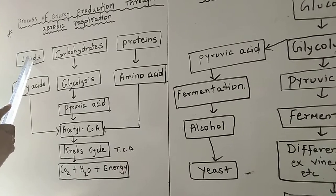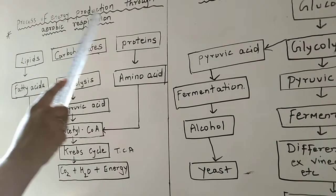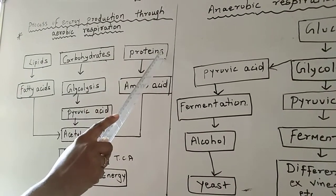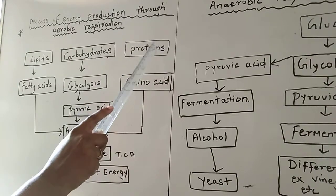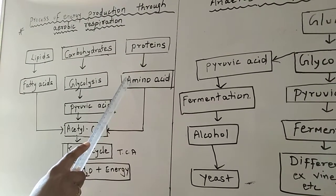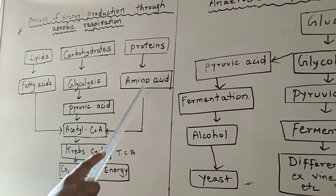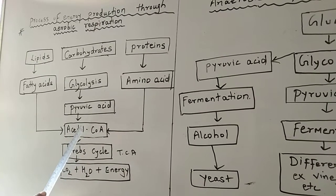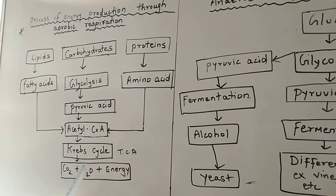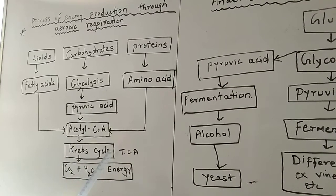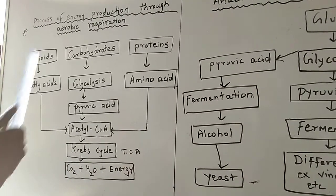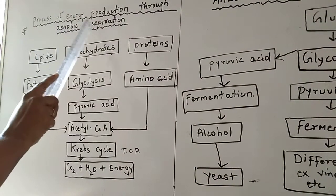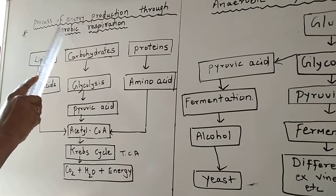Now if lipids or fats are also not present in our diet, then in that case the body utilizes proteins. We had also taken information that proteins are known as body building nutrients. Now proteins get converted into amino acids, and from amino acids they get converted into acetyl coenzyme. And again from acetyl coenzyme, carbon dioxide, water and energy would be produced with the help of Krebs cycle. So all this process occurs in the presence of oxygen, and such type of respiration is called aerobic respiration.